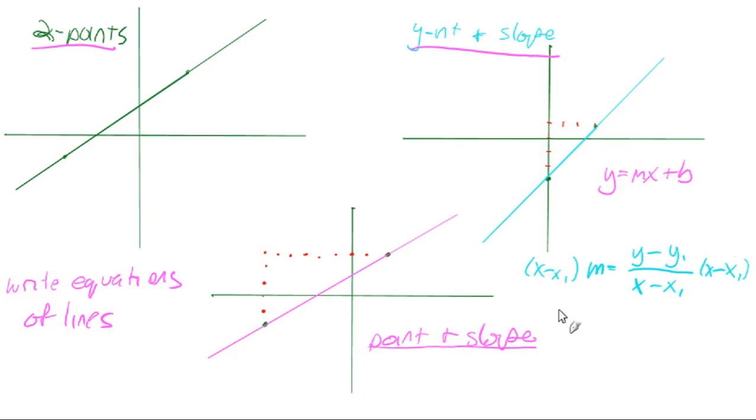then we get y, we will get y eventually here, y minus y1 equals m times x minus x1.